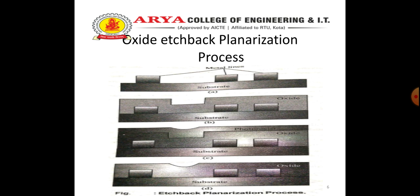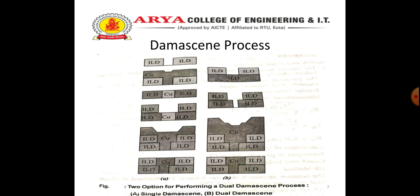Then a second layer of oxide is deposited. Finally, another etch-back cycle can also be run if required. After this process, we have the damascene process. The damascene process follows the given steps: first, the interlayer dielectric is etched anisotropically.